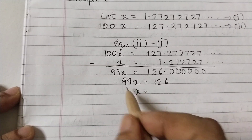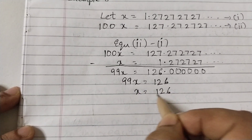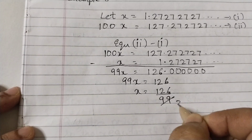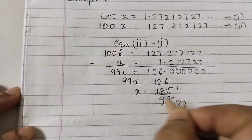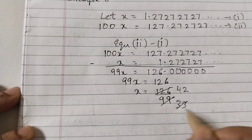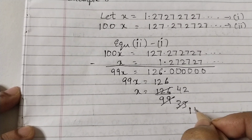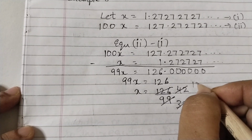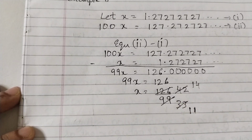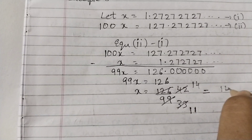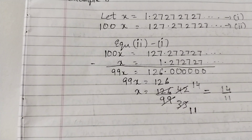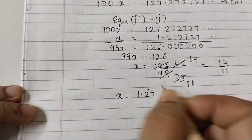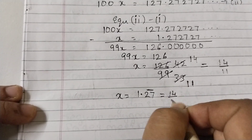Now x equals 126 divided by 99. Doing the cancellations — three threes are nine, three fours are twelve, and so on — this simplifies to 14 over 11. So x = 1.27 bar = 14/11.